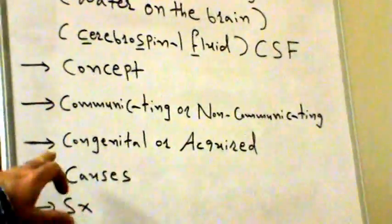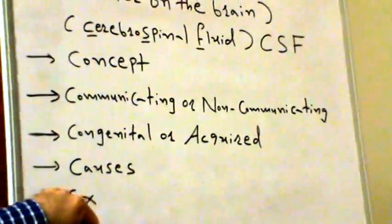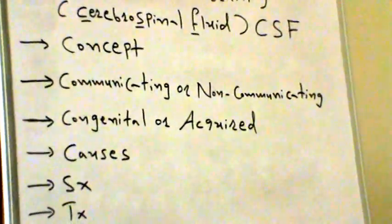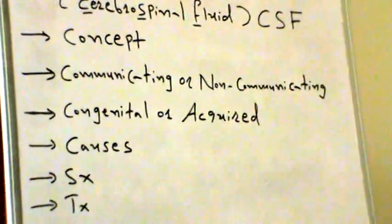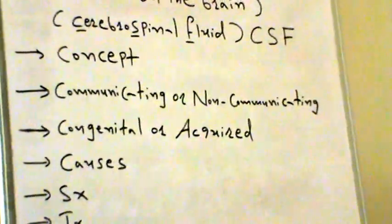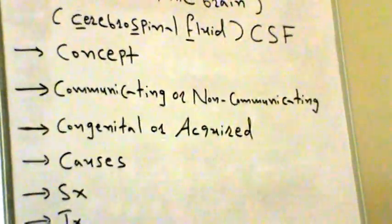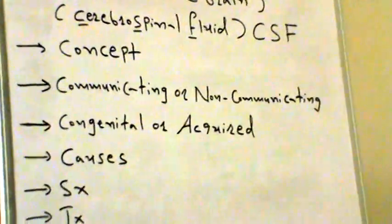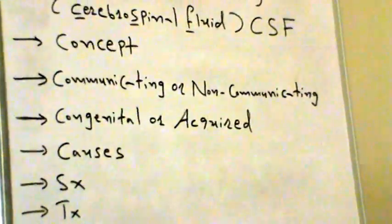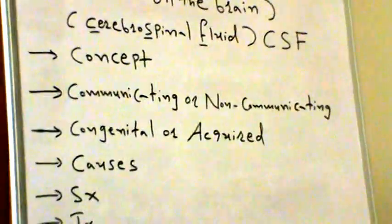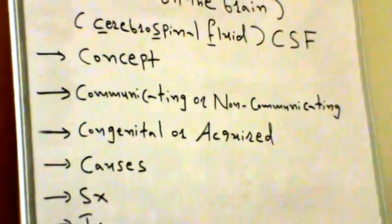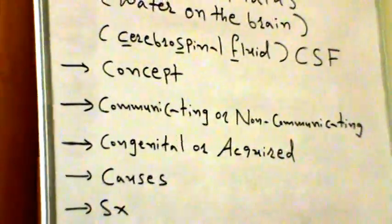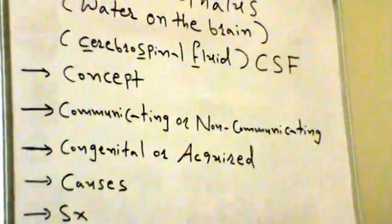One form of communicating hydrocephalus seen in infants is benign external hydrocephalus. The cause is unclear, but CSF flow studies suggest a disturbance in absorption. This condition usually corrects itself without surgery by 18 months of age.